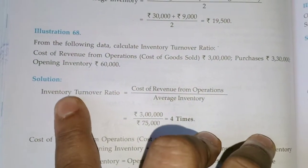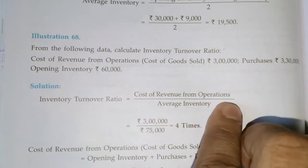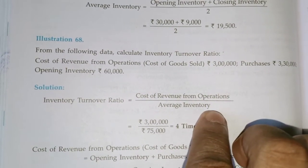The formula is: Inventory Turnover Ratio = Cost of Revenue from Operations divided by Average Inventory.